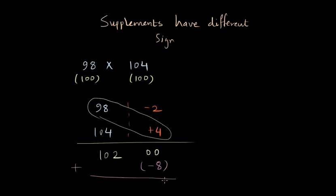Next thing is to multiply minus 2 and plus 4, and the result that we get is minus 8. So basically what we want to do is combine the two results, and now we have to combine this number and this number here.